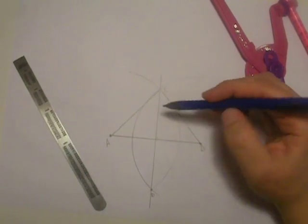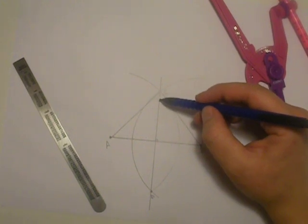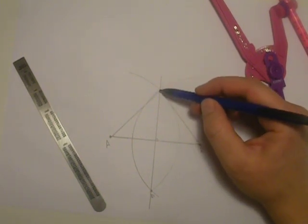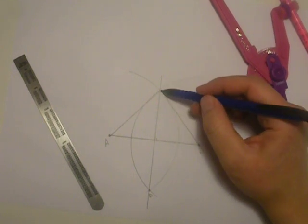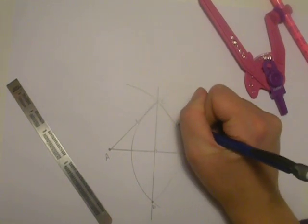And like I just said, a bisector is a set of points, a line consisting of a set of points that are all equal distance from both A and B. So C to B is the same distance as C to A, making this line congruent with this line.